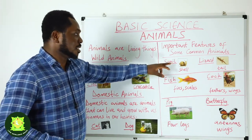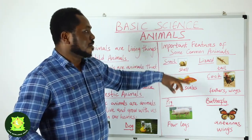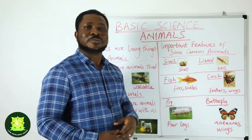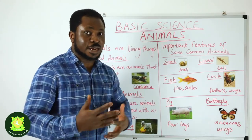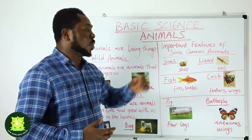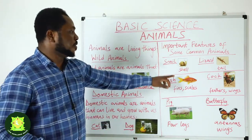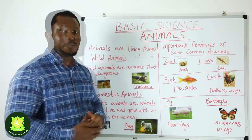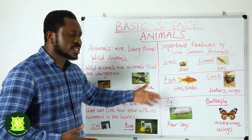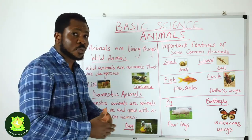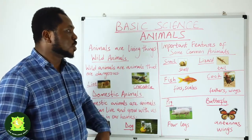The snail has a shell. Also, when you see a lizard, a lizard has a tail, and the tail helps them to balance when they are moving. When you see fish, you see the fins and the scales. Fish have fins and scales — the fins help them to swim in water while the scales protect them.